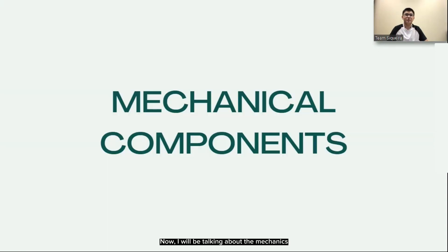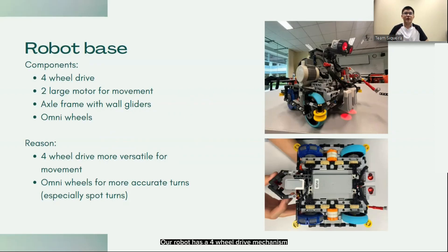Now, I'll be talking about the mechanics behind our robot. Our robot has a four-wheel drive mechanism powered by two large NXT motors. We chose to use four-wheel drive due to its capability over terrain and increased traction compared to two-wheel drive.